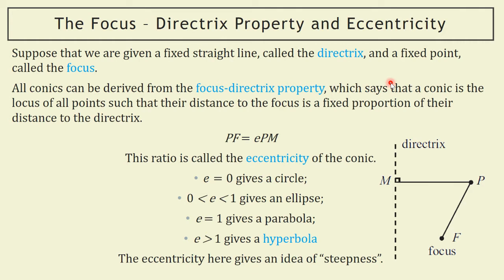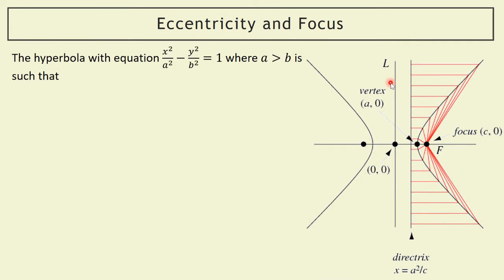For the hyperbola, eccentricity gives us more of an idea of steepness — it's about fatness for the ellipse but more about steepness for the hyperbola. We've got our vertices where we're crossing the axis, the center, a focus and a second focus, a directrix and a second directrix — symmetry again as with the ellipse. The eccentricity is greater than one, so the distance to the focus is more than the distance to the directrix. The foci are at c,0 and minus c,0, the same way as for the ellipse.